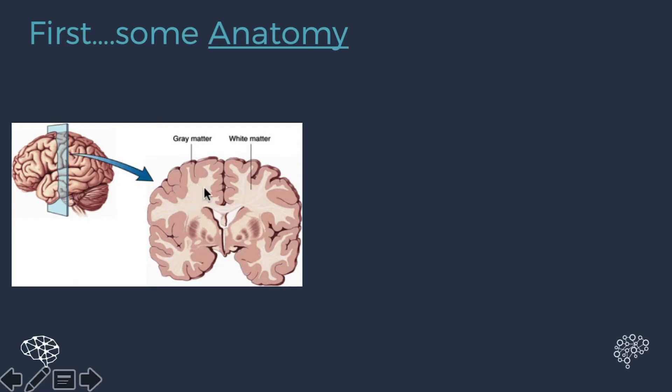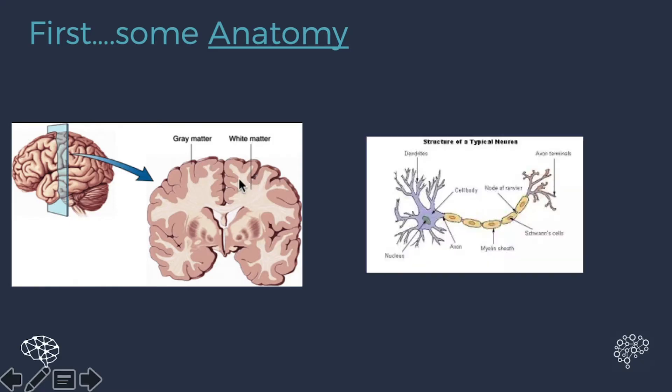This deeper part here is called the white matter. And then this outer part is called the gray matter. And they're actually part of the same cell. So this is what a brain cell looks like. This is called a neuron. And the outer part here is the cell body. This is where the nucleus is.